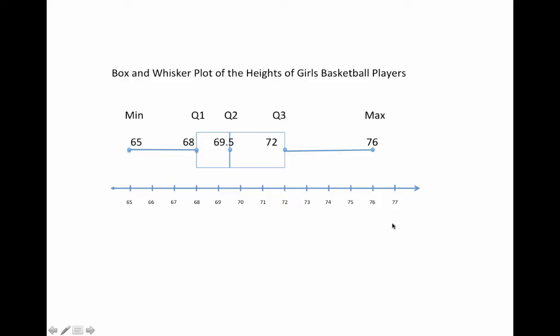With those numbers, we can go ahead and draw the box and whisker plot. You first start by drawing a number line, which has to go at least from the minimum to the maximum. This one goes one further, but it needs to go at least from the minimum to the maximum.